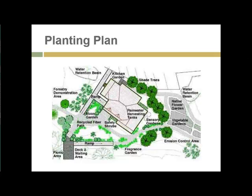Once the master plan is developed, one of the next plans is the planting plan, where the placement of trees, shrubs, perennials, bedding plants, and other elements is detailed. This also addresses modifications to the land needed to create planting areas — such as a water retention basin which may require grading, and an erosion control area that may require erosion blanket protection while plants are becoming established.